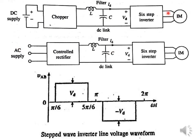In both cases, we get a variable voltage variable frequency supply at the induction motor terminals. This figure shows the line voltage at the induction motor terminals. One of the line voltages, VAB, is shown. The waveform of VAB is a stepped waveform, which will obviously contain a large amount of harmonics. The peak value or magnitude of the line voltage is equal to VD, which is the input DC voltage.